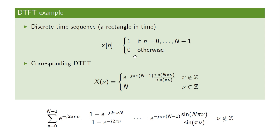You can compare this to the time-shift property covered earlier. For the particular case when ν equals an integer, we have 0 divided by 0, which doesn't make sense. But in that case, you can work out explicitly what the transform is — putting in ν equal to an integer, what you have is simply 1, so it's the sum of 1s over N terms, giving N.